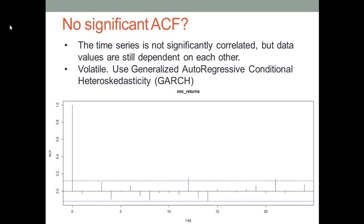Some classmates may say this is different from what we have learned, because none of the spikes is significant — and you are right. We have to use a new model to process a time series like this. When you see an ACF chart with non-significant spikes, the first thing you want to think about is that this time series is not significantly correlated, but the data values are still dependent on each other.